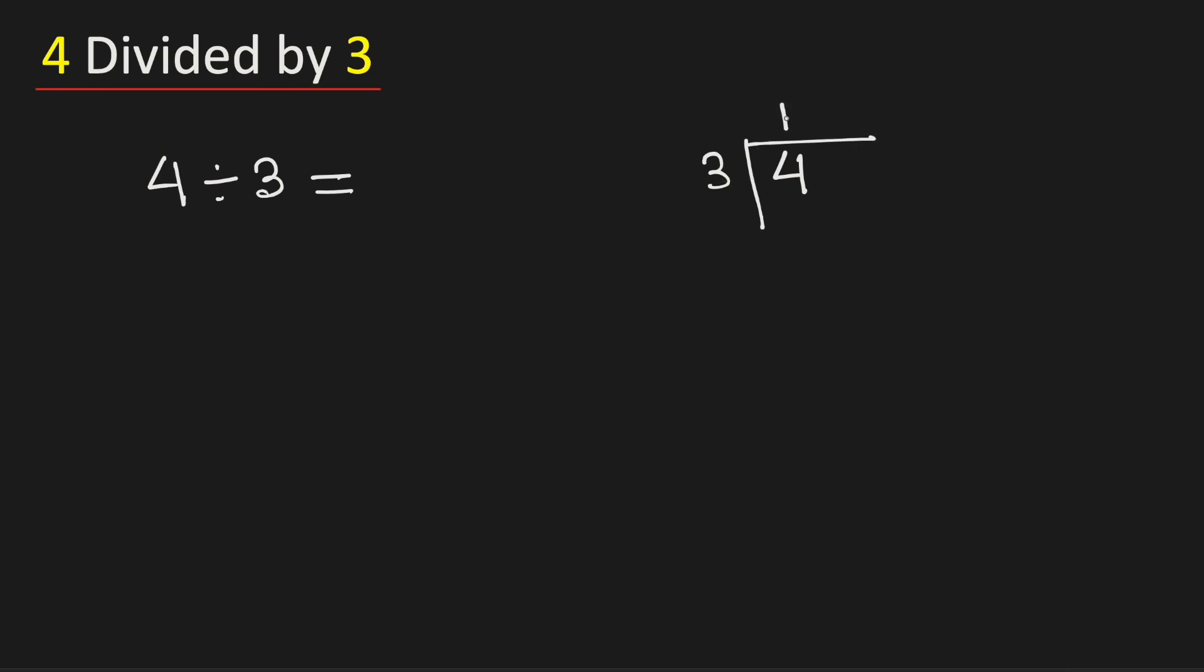We know that 3 times 1 is 3. Subtract, we get 1. 1 is less than 3, so we put a decimal here so that we can write 10. Now 3 times 3 is 9. Subtract, we get 1.